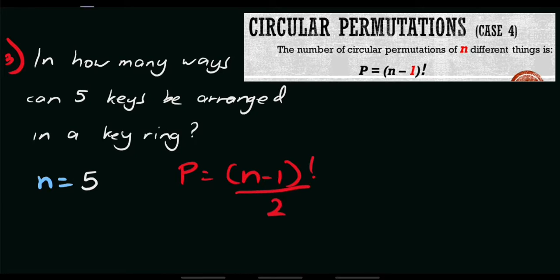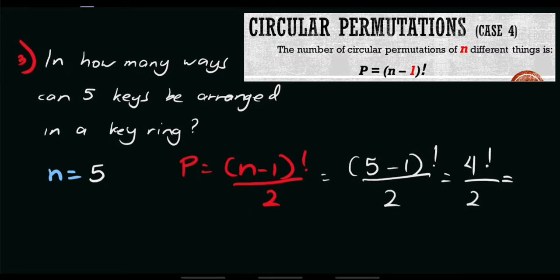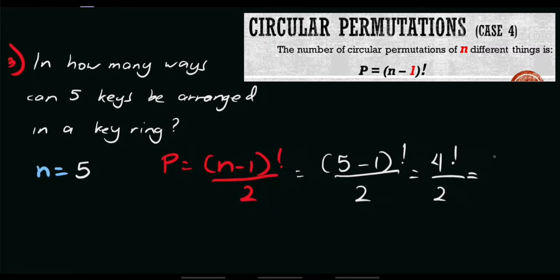Let's substitute this value again. Let's simplify. That equals 5 minus 1 factorial divided by 2. So, 5 minus 1 equals 4. So, we have 4 factorial divided by 2. By simplifying, 4 factorial equals 24 all over 2. Therefore, the answer is 12. This time, we have 12 possible orders or arrangements. That's it. That's what happens when the problem is about a key ring.